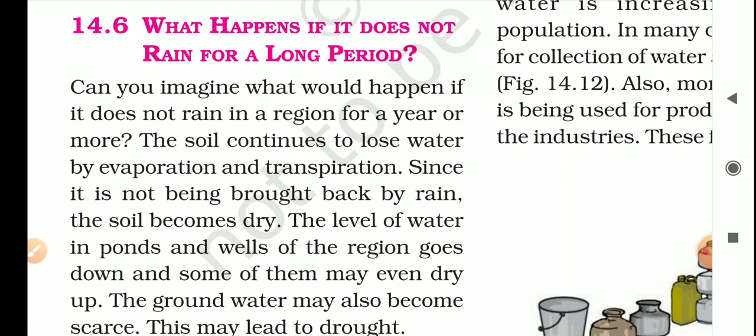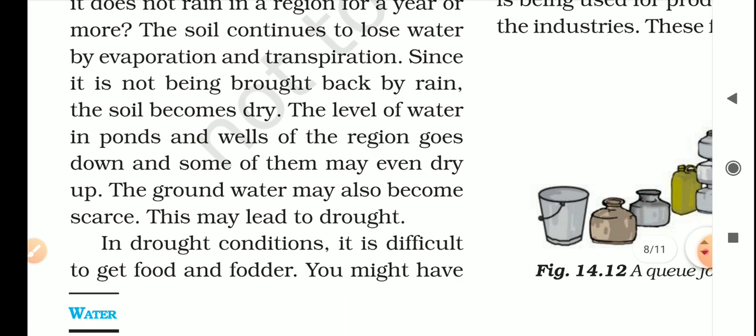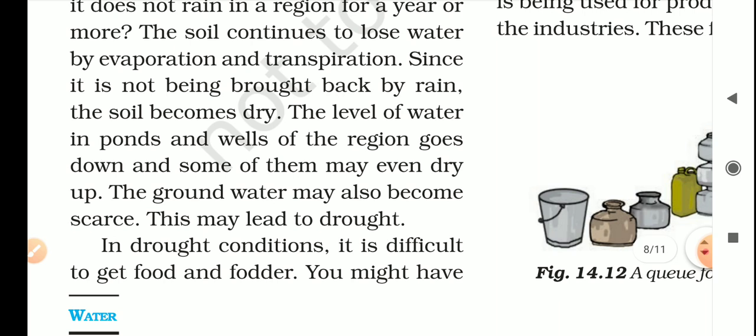So all this shortage of water may lead to drought. In drought conditions, there will be shortage of water, and less water will be available for agricultural purposes, so the production of food from agriculture will reduce. It becomes difficult to get food and fodder. Thus, drought conditions lead to shortage of water, food, and fodder.